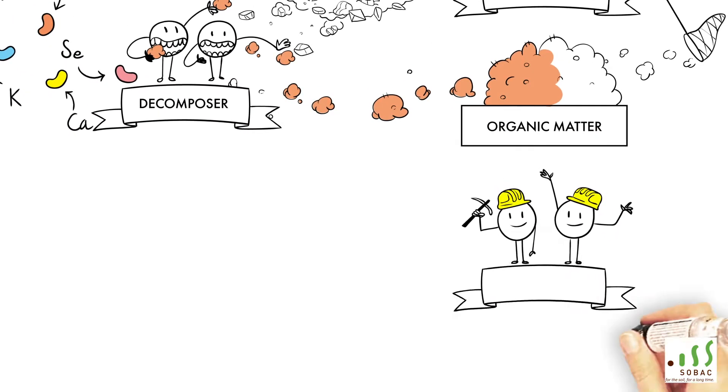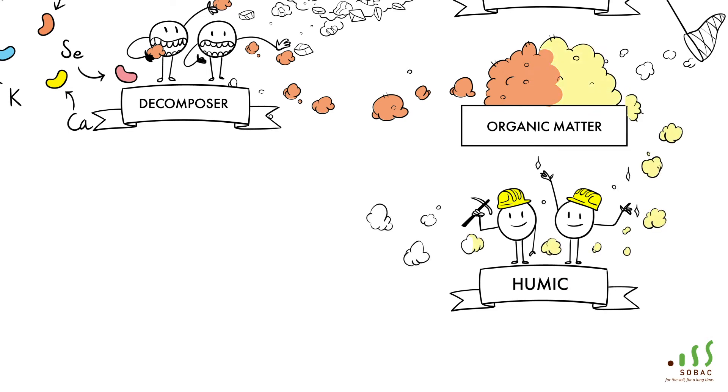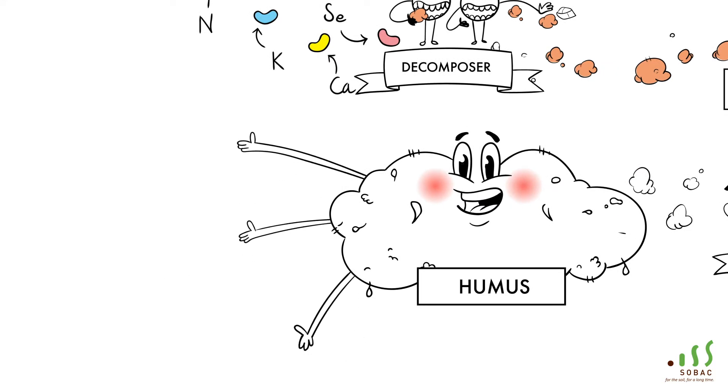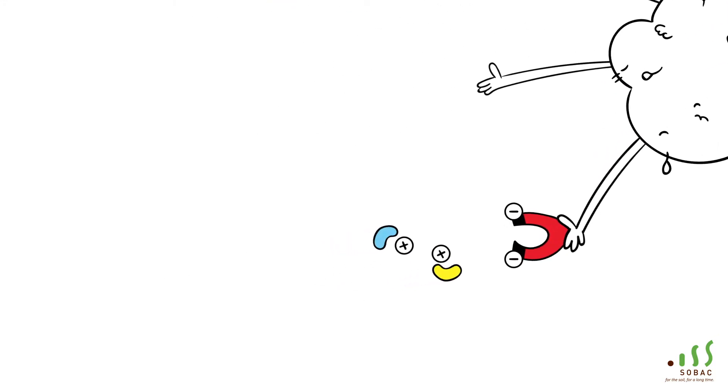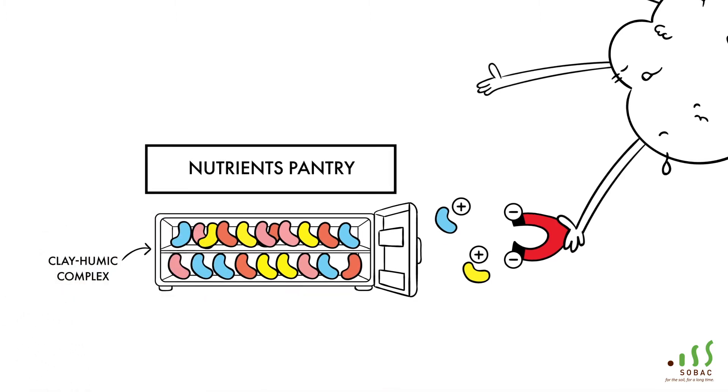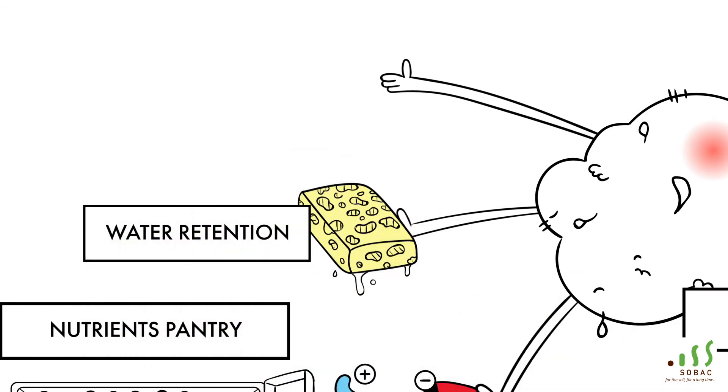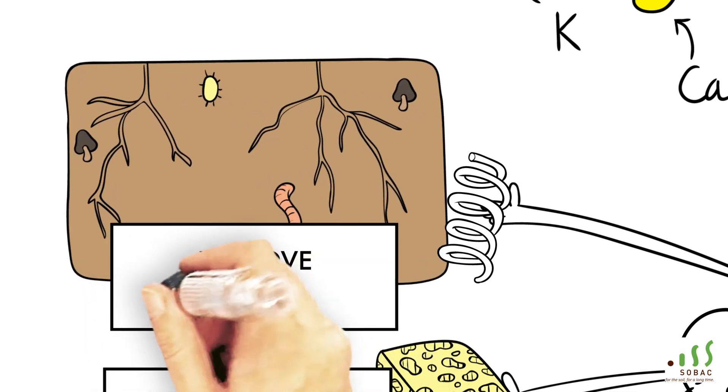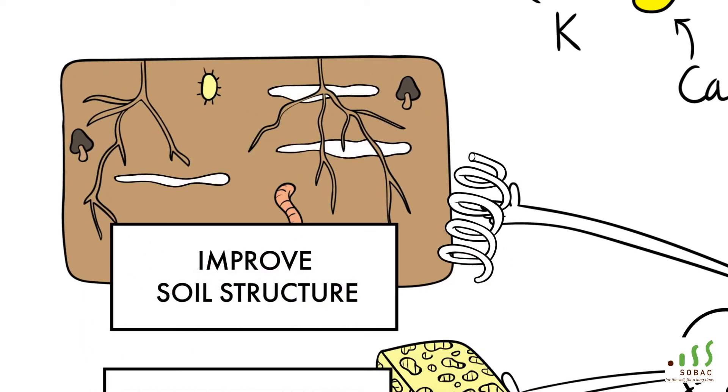The humic microorganisms transform what is left of the organic matter into humus. The humus has three different roles: a magnet for nutrients to create a pantry called humic or clay-humic complex, a sponge to retain water, and a spring to improve the structure and aeration of the soil. The soil is more oxygenated, which facilitates free draining of water.